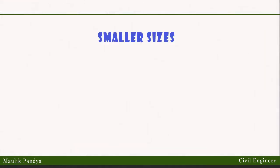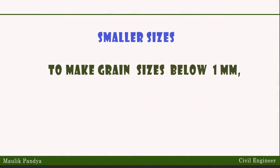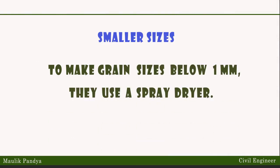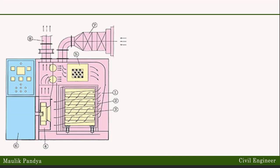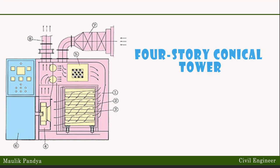For smaller sizes, the technology is not as simple. To make grain sizes below 1 mm, they use a spray dryer. It's a different process from the granulating dish but nets the same result. They spray the slurry into a drying chamber, which consists of a four-story conical tower that provides a controlled environment for the slurry to cool and form into spheres.